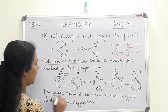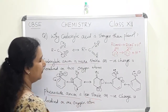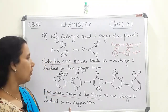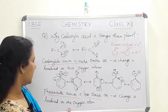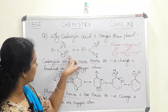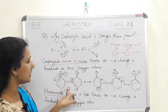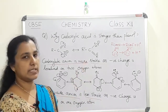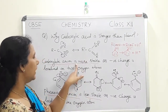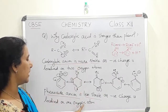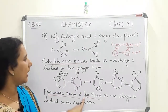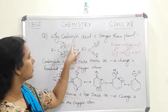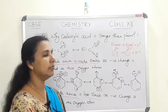The carboxylate anion is more stable because the negative charge is delocalized over two oxygen atoms, whereas the phenoxide anion is less stable because the negative charge is localized on only one oxygen atom. By drawing the resonating structures, we can conclude that carboxylic acid is stronger than phenol.